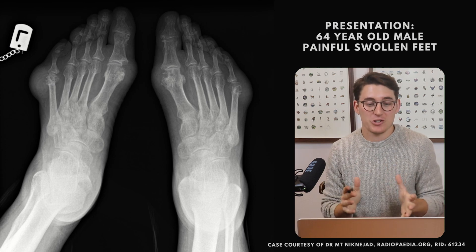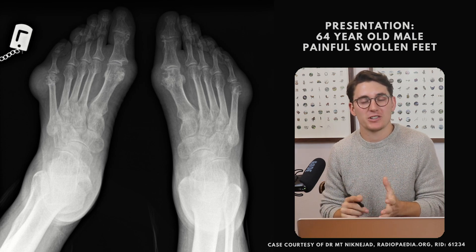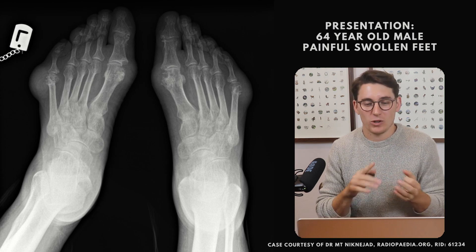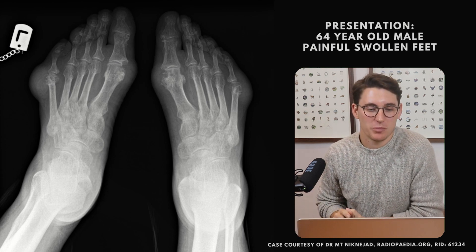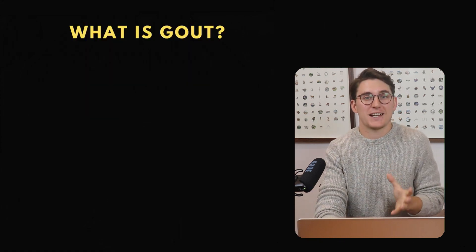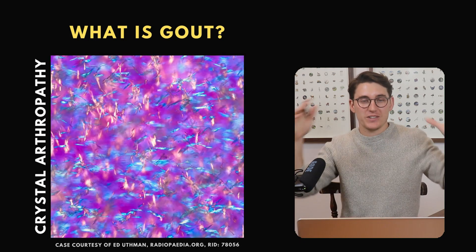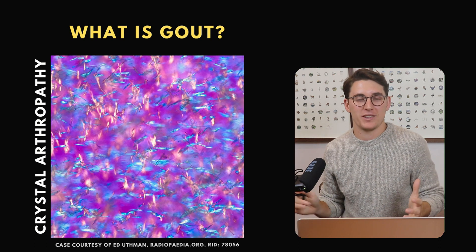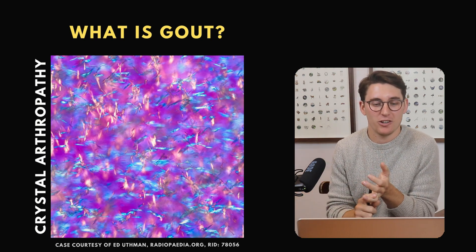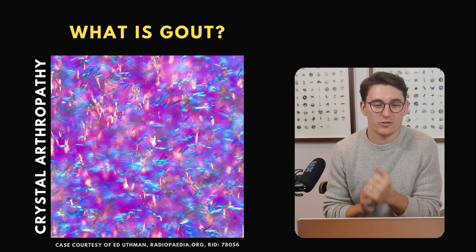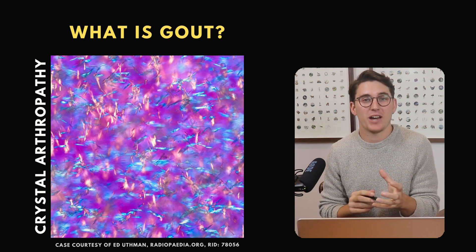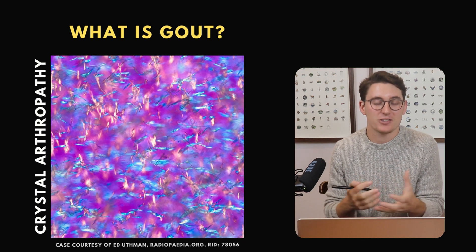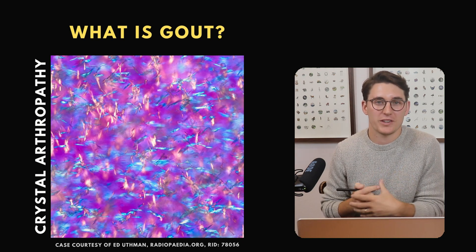Before we go through those images I first want to discuss what exactly gout is, who actually gets gout, and what's the natural history of the disease. Gout fits under the umbrella term of crystal arthropathies. There are many crystal arthropathies, but gout and CPPD are by far the most common. Here we have a picture of the monosodium urate crystals that have been aspirated out of the synovial fluid of a patient with gout.